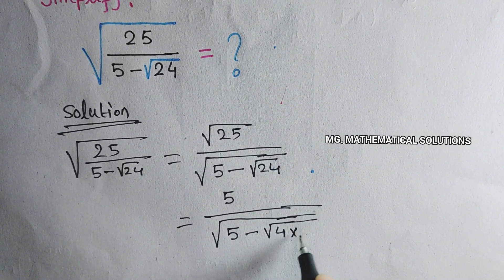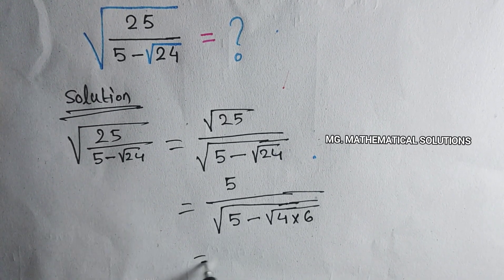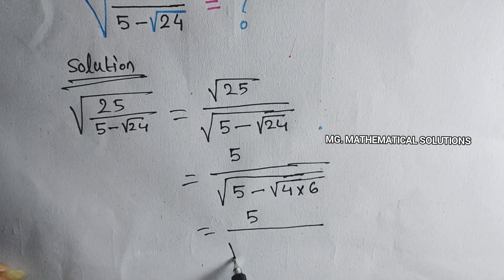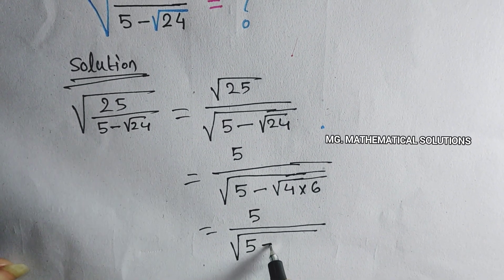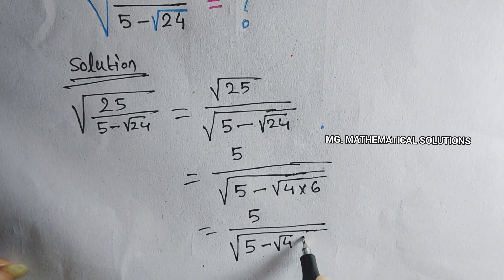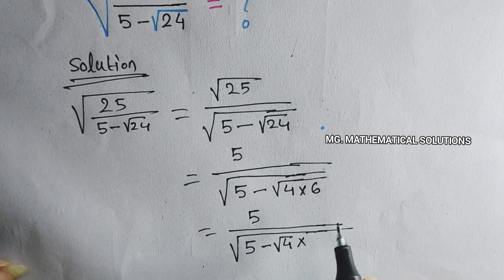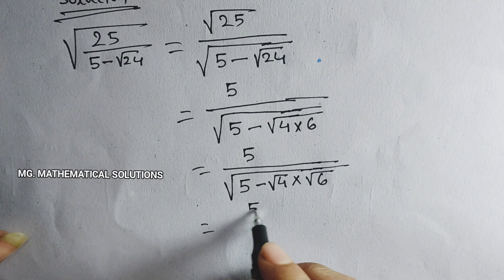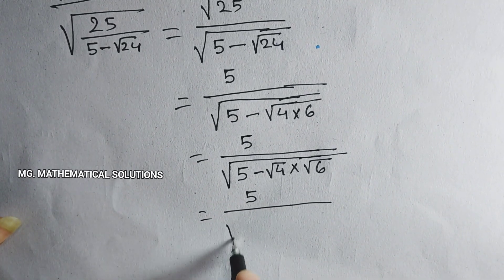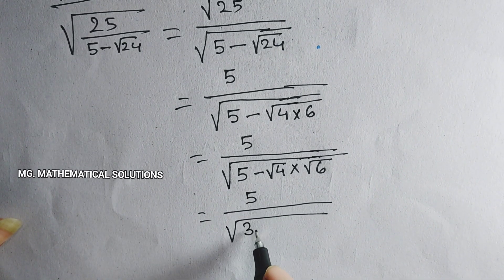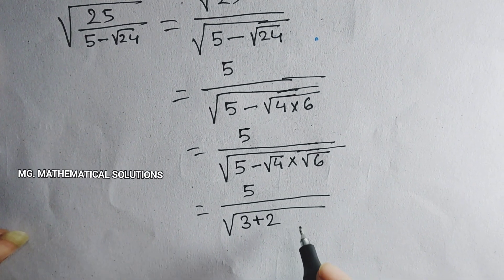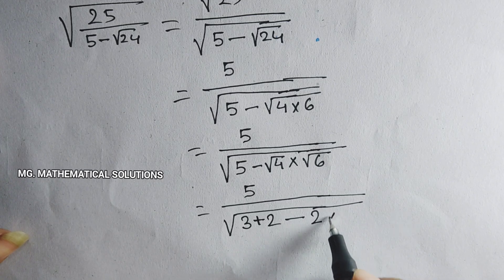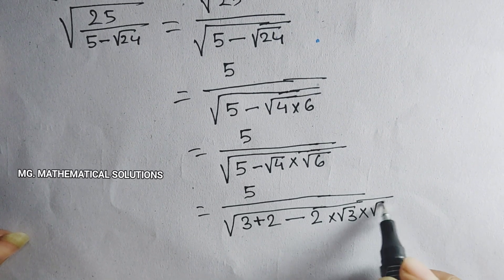We can write 24 as 4 times 6, so root 24 equals root 4 times root 6, which is 2 root 6. Also, we can write 5 as 3 plus 2, and root 6 as root 3 times root 2.